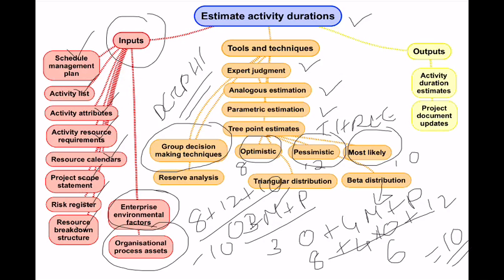Reserve analysis is also a tool — when estimating activity durations we need to factor in buffers. The outputs of estimate activity durations are activity duration estimates and project document updates, because based on the durations we may need to rework project milestone dates and deadlines. This can mean updating the project plan, milestone dates, and sometimes even the project charter.